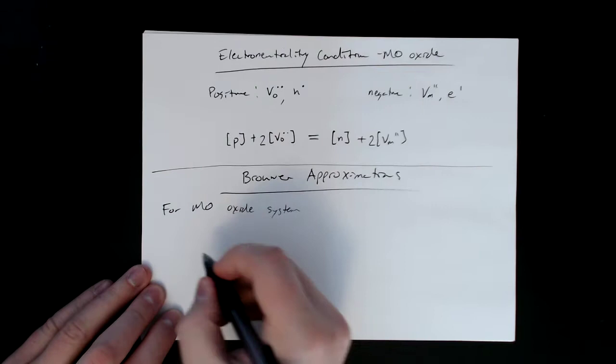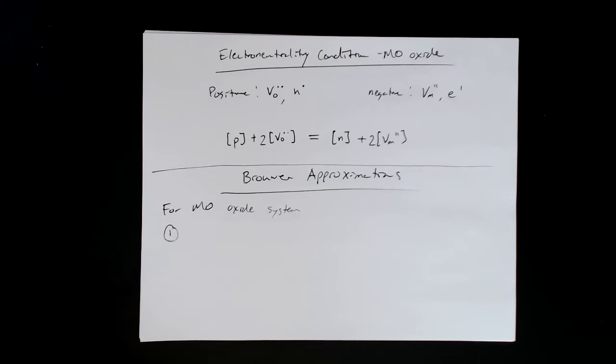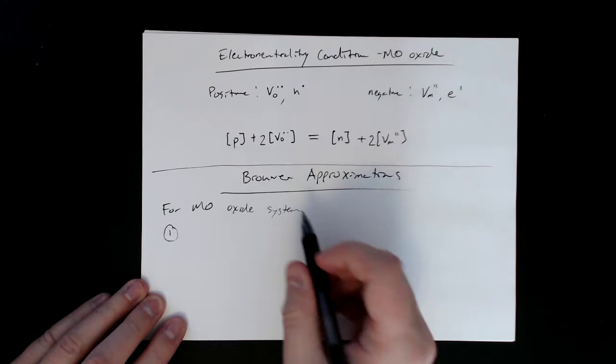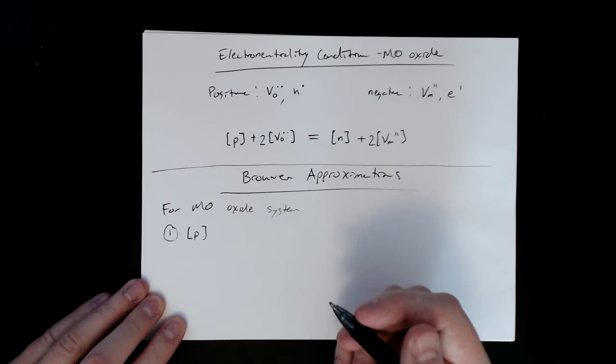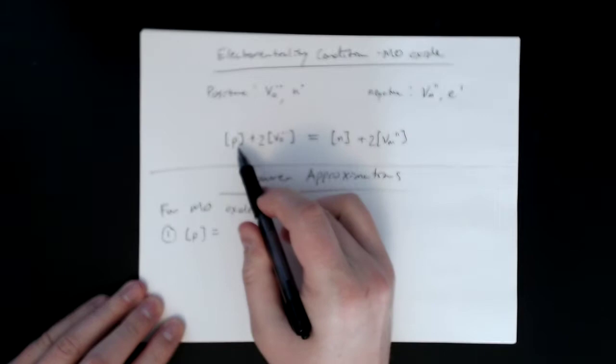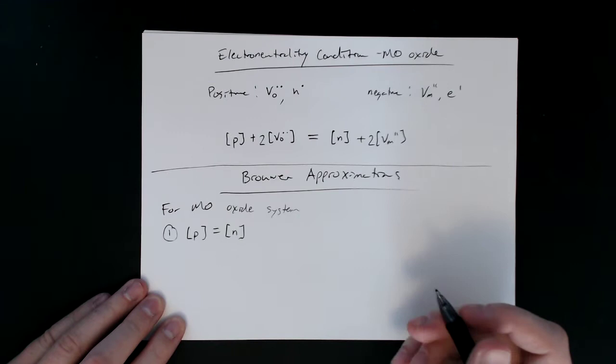All right, so again we basically pick one positive and one negative and we write out the condition. If we just kind of start with this, electron holes, and then we assume, so that's one positive and this is our one negative, and so that's our first. We're just going through the different combinations at this point.